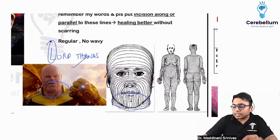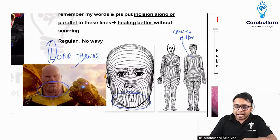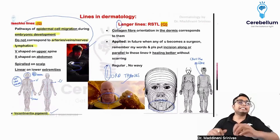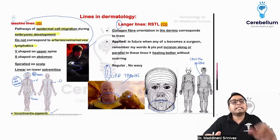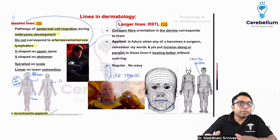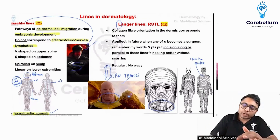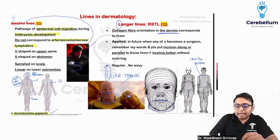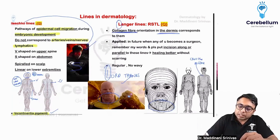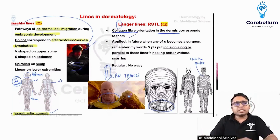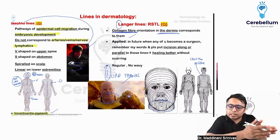An important feature of Langer's lines is that they cross the midline. The importance of these lines is basically that they are the lines along which collagen fibers are going to orient in the dermis. We know collagen is present in the dermis, and the collagen fiber orientation in the dermis corresponds to Langer's lines.